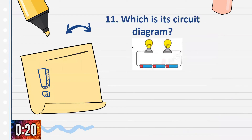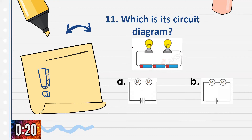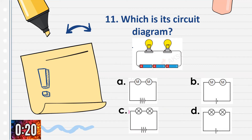For number 11: Refer to the picture. Which is the circuit diagram of this picture? We have two bulbs, wires, and three cells. Is it A, B, C, or D? Timer starts now. Which is the circuit diagram of the picture — two bulbs, wire, and three cells?